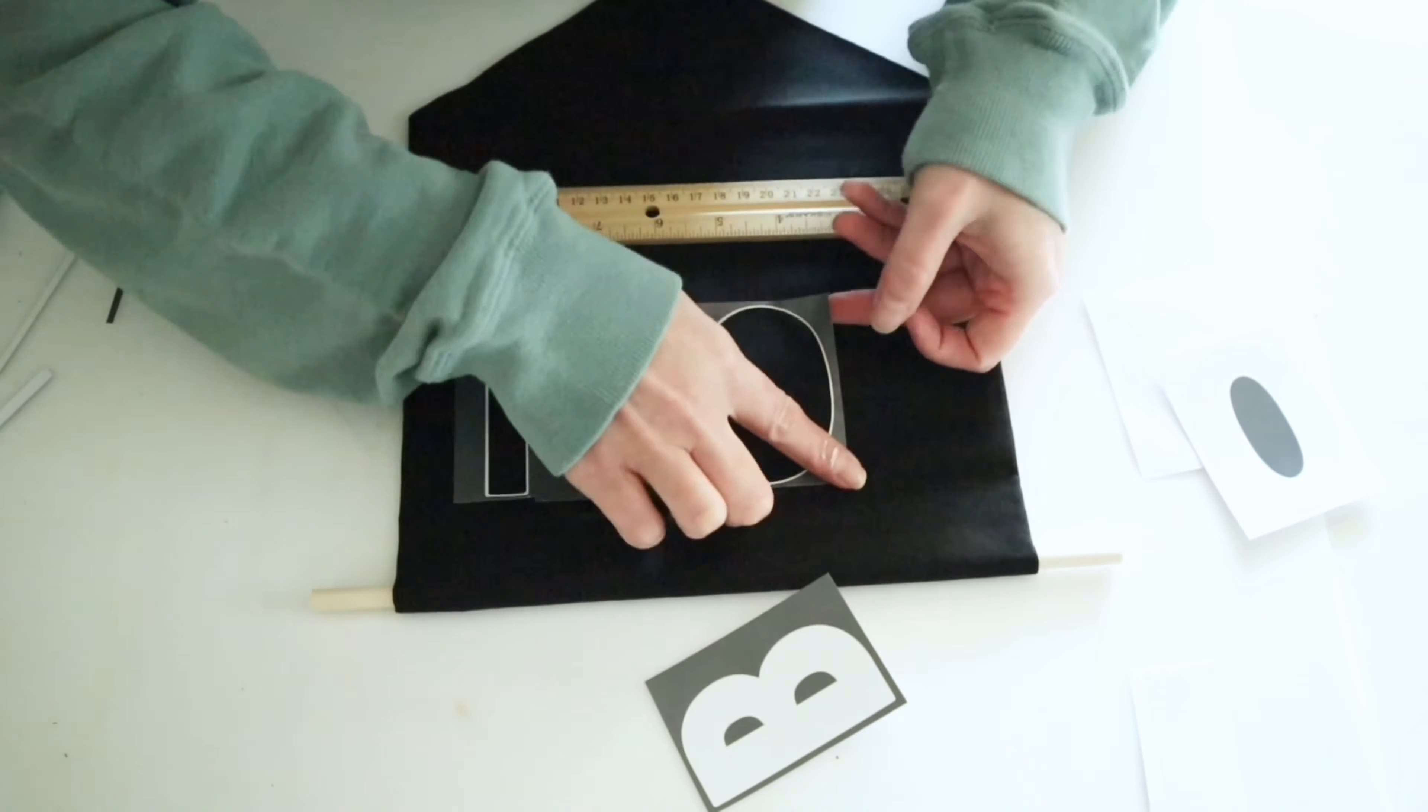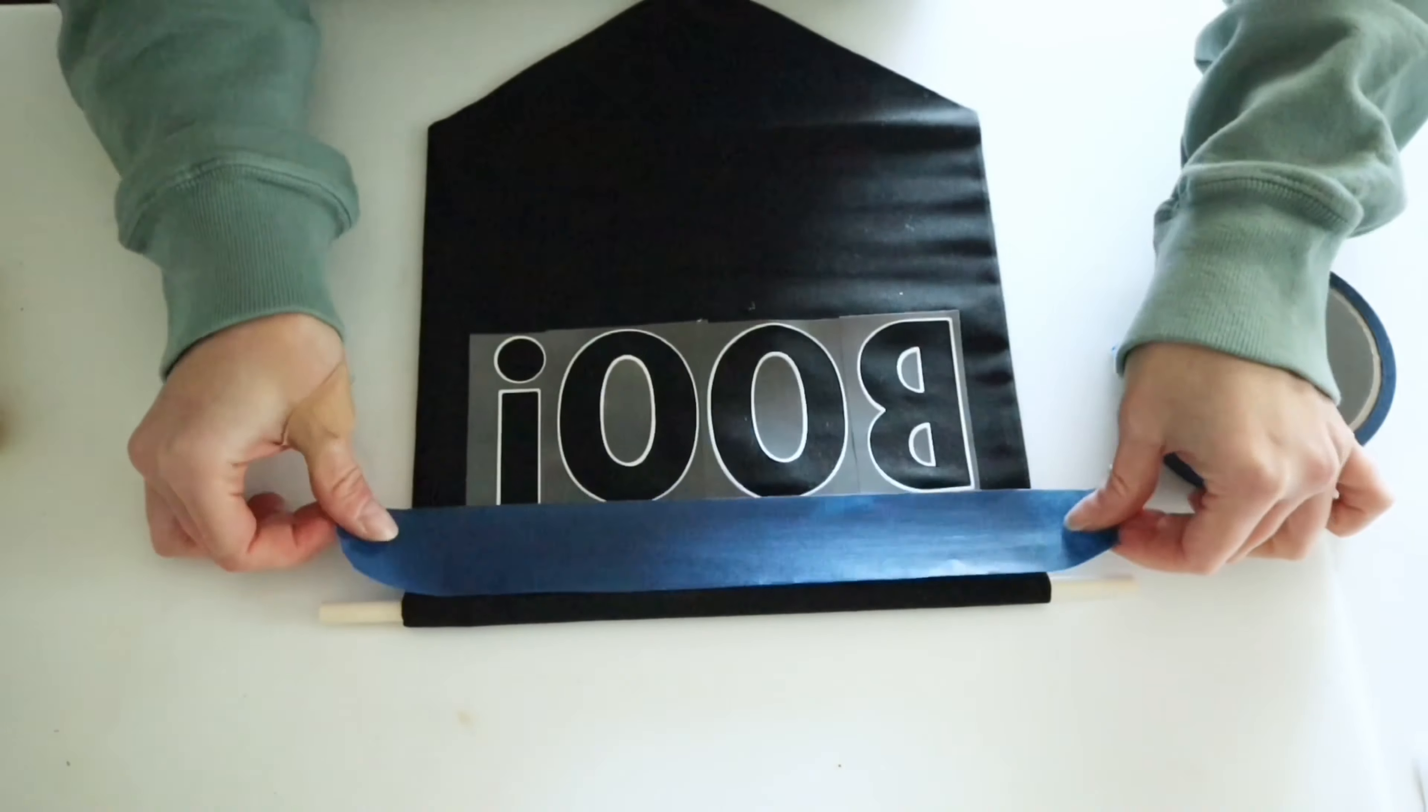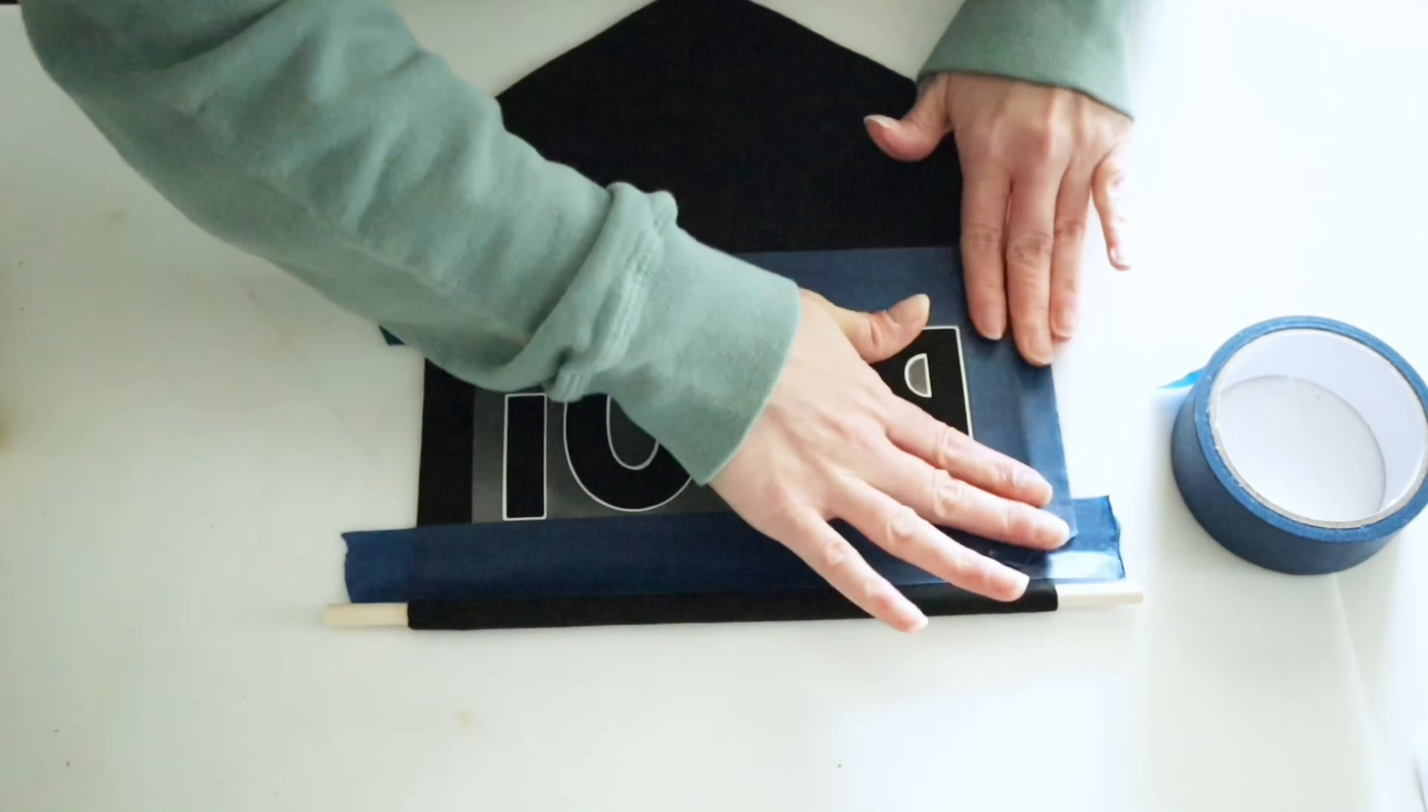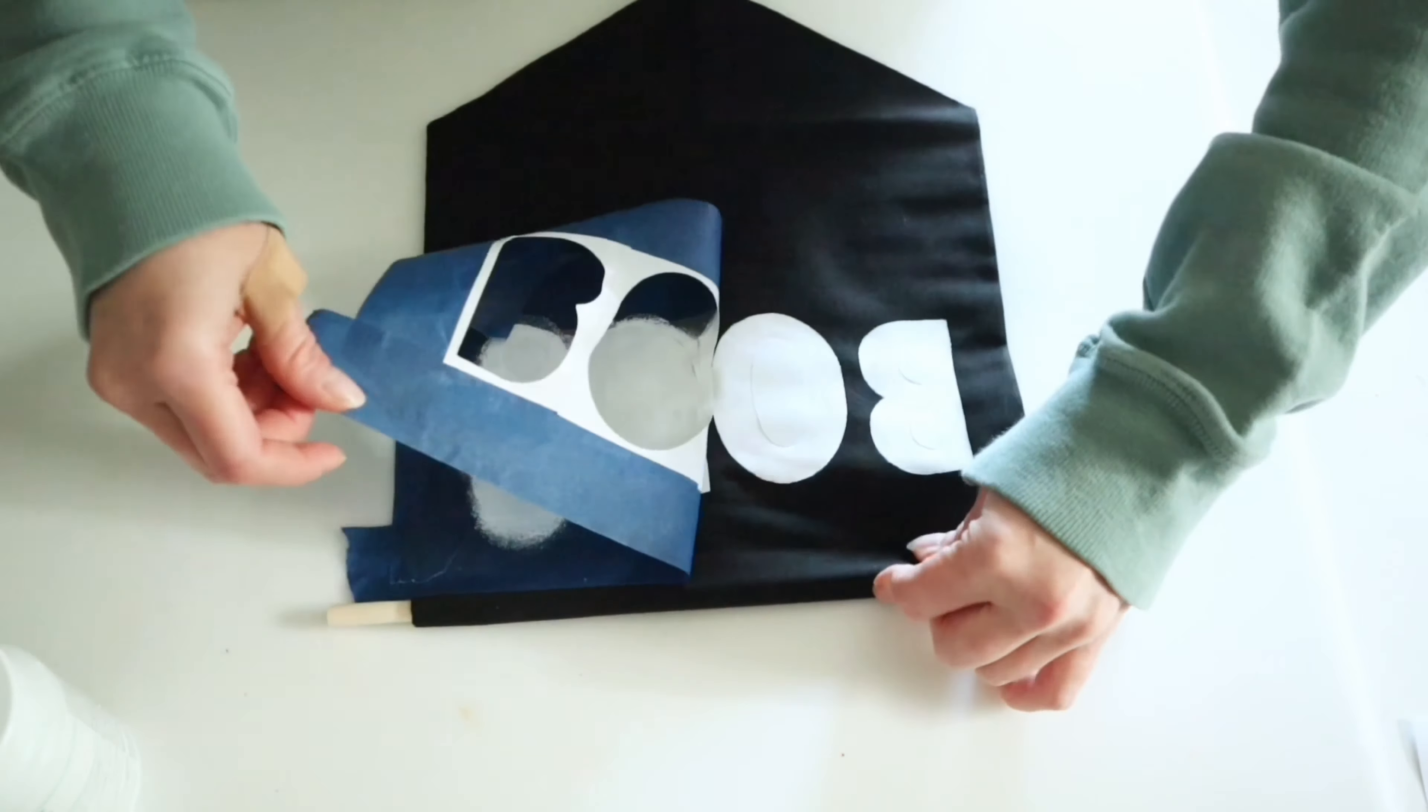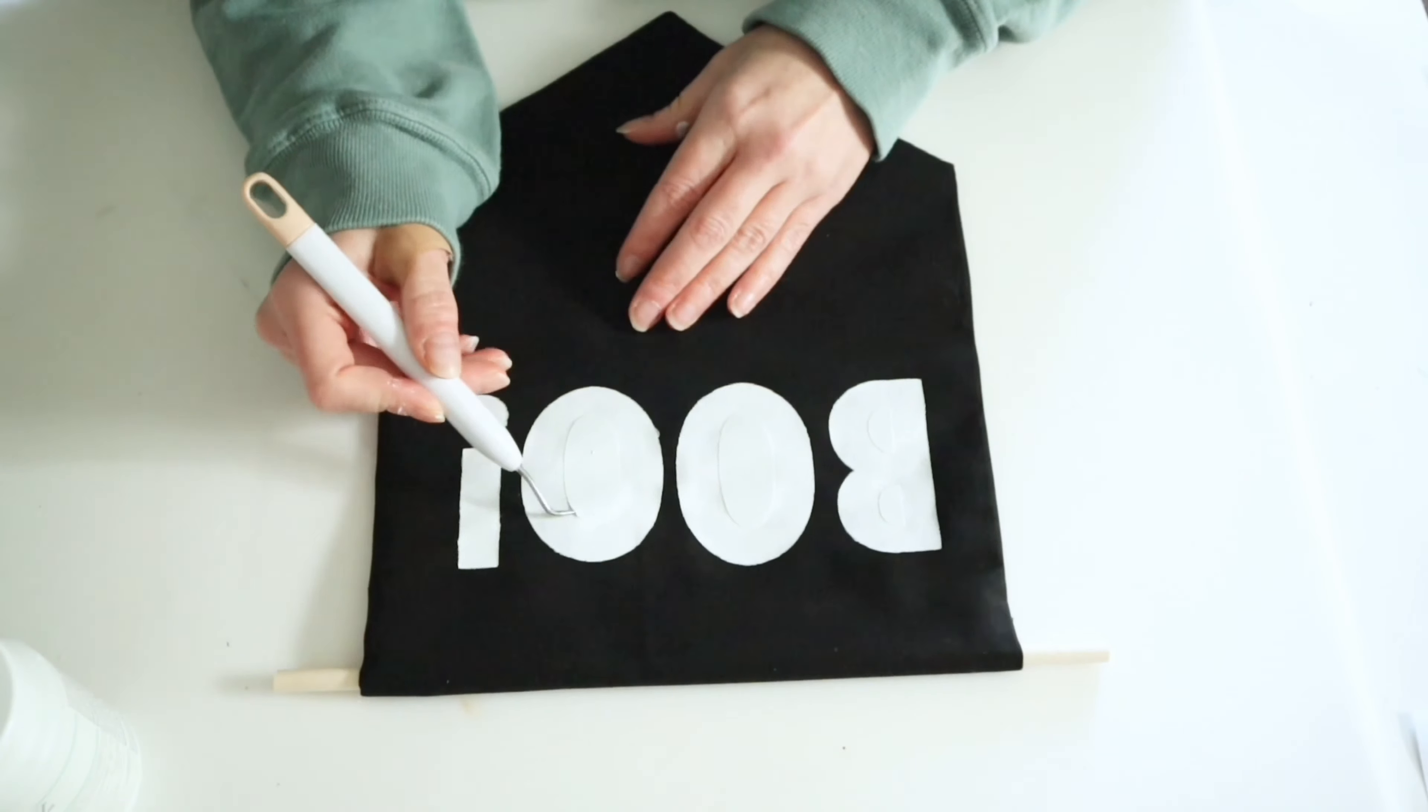And once I have all of the backings from the stickers onto the fabric, I'm going to take some painter's tape and tape around my words so that I don't get any excess paint onto the fabric. Then I'll just use my white chalk paint to fill that in. And once it was dry, I was able to just remove all the tape and the backings from the letters. I did use one of Dollar Tree's little Cricut tools to remove the center of the O's and the B.